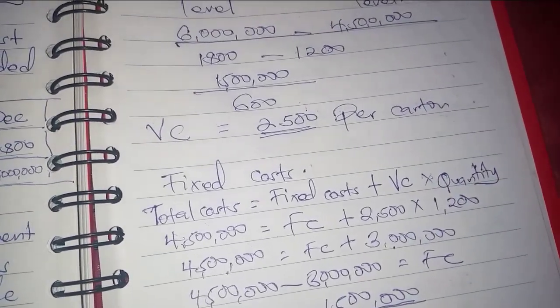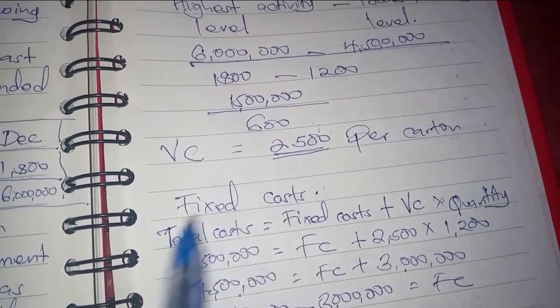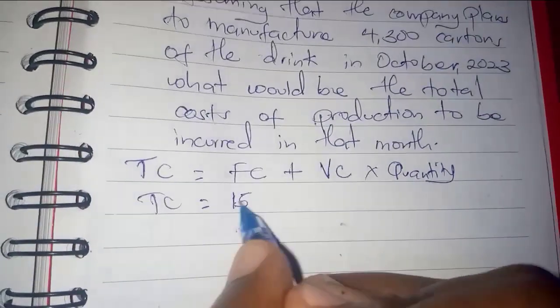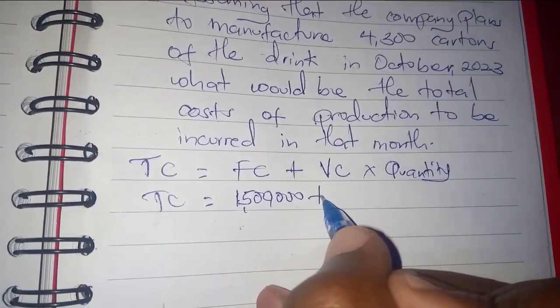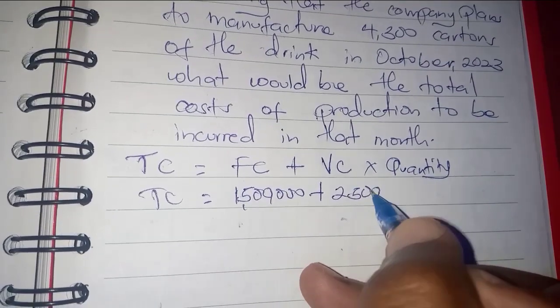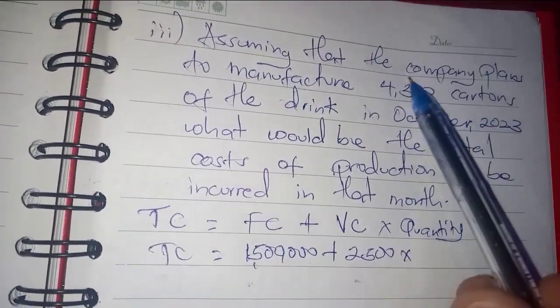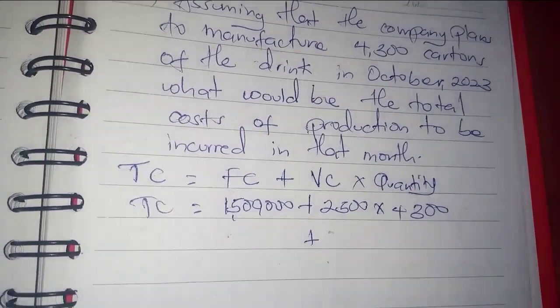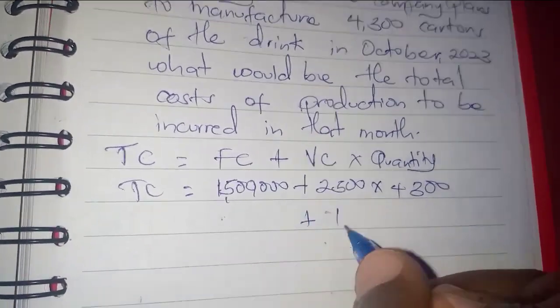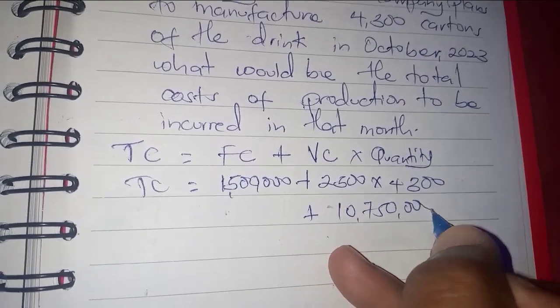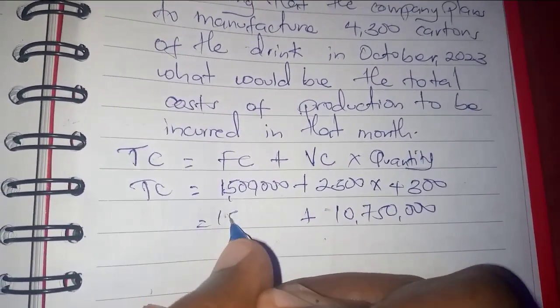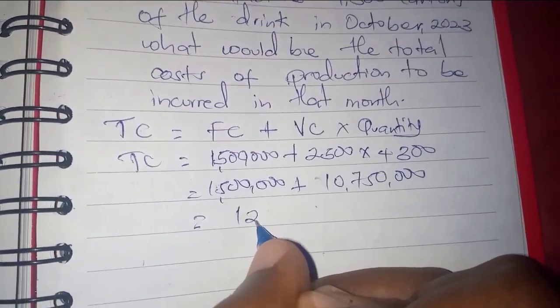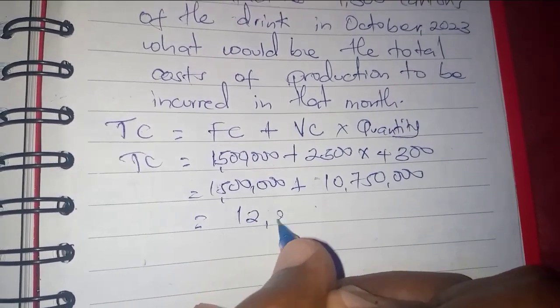Then the variable cost is 2,500 per carton, so we come here and write 1.5 million plus 2,500 times the 4,300. So this is 10.75 million plus 1.5 million, which makes it 12.25 million.